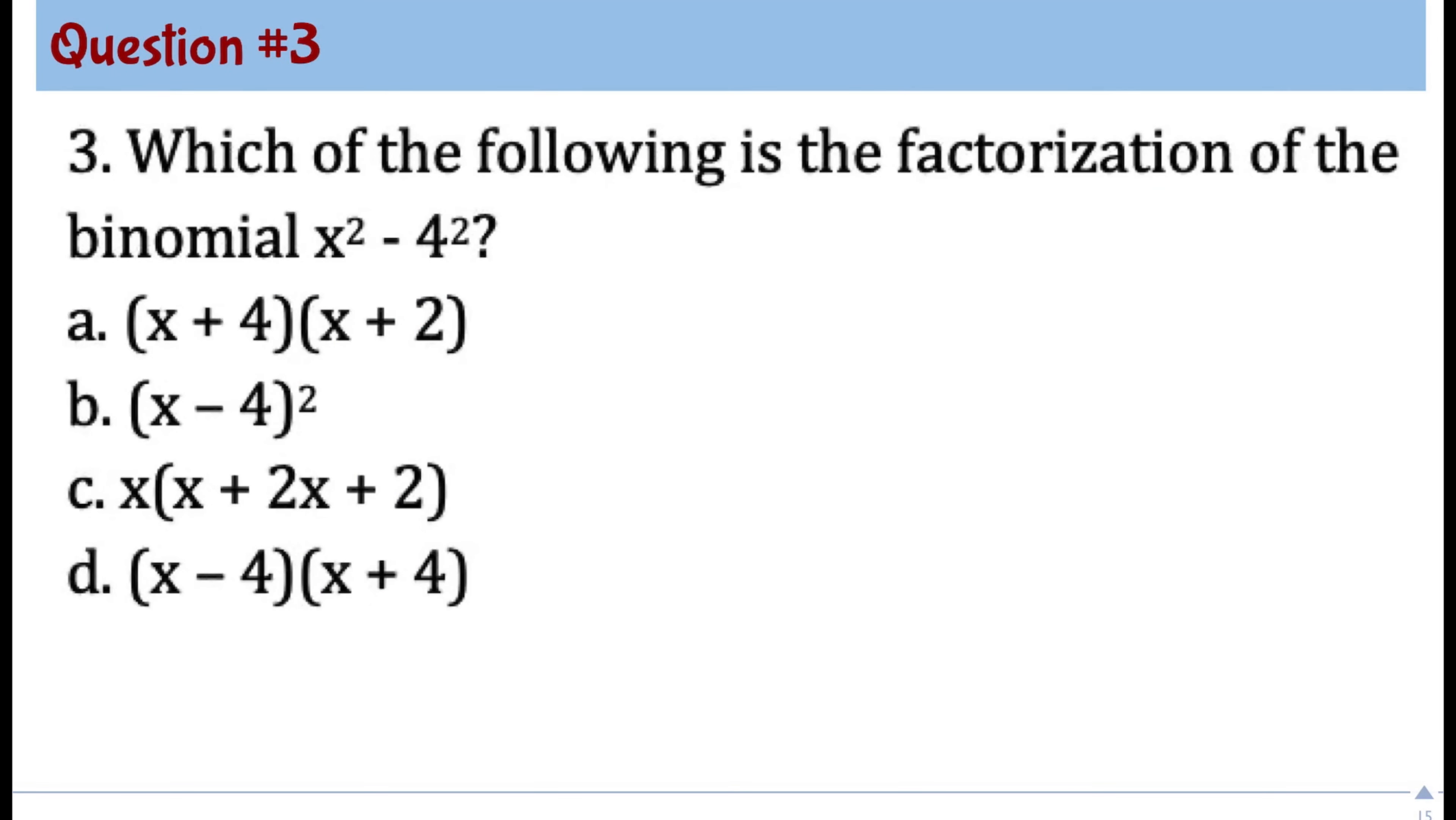Question number 3. Which of the following is the factorization of the binomial x squared minus 4 squared? So this binomial can be simplified as x squared minus 16, because 4 squared is 16. So here, we can eliminate already the choices A, because 4 times 2 is only 8. And here, if you distribute the property, you will not get 16. So we only have two choices here, B and D. One thing that you need to remember about factoring x squared minus 16 is it is called a difference of squares. And when you're factoring difference of squares, there will be two pairs of parentheses. x squared, we're going to use x times x, because that's x squared. For the minus 16, we need to use plus 4 and minus 4. And that is why the answer here should be letter D.